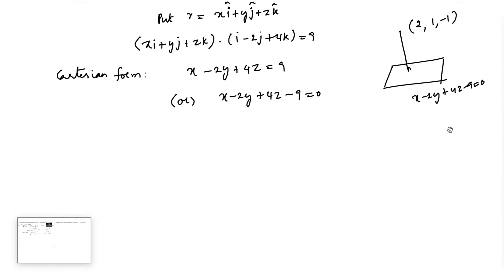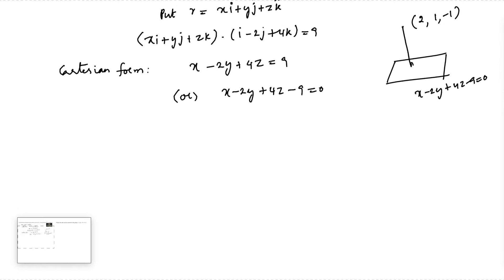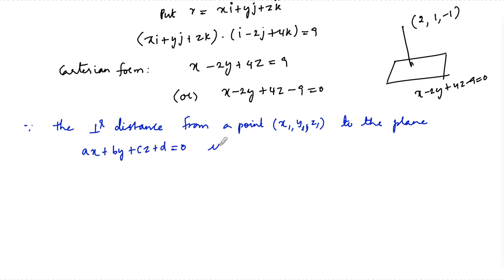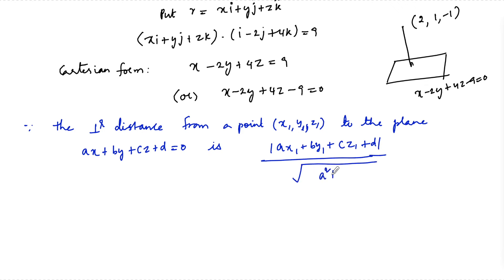Since we know that the perpendicular distance from a point x1, y1, z1 to the plane is given by the formula involving ax1 plus by1 plus cz1 plus d divided by the square root of a squared plus b squared plus c squared.